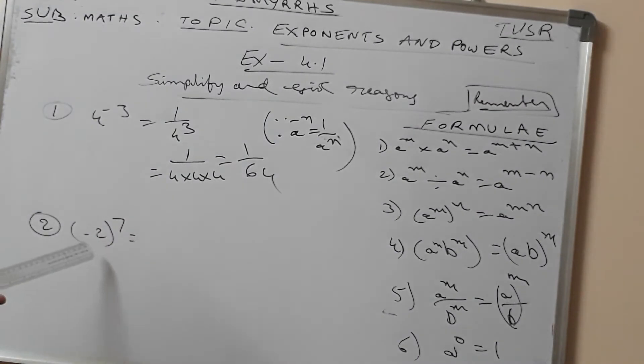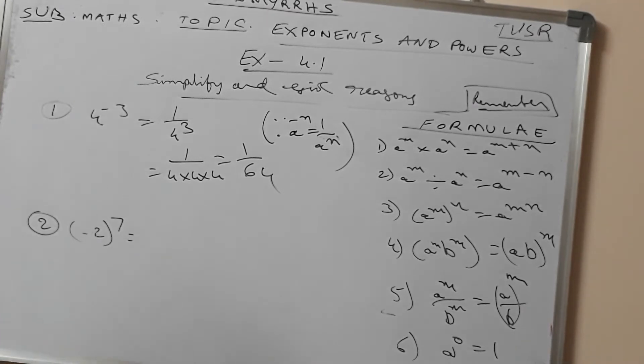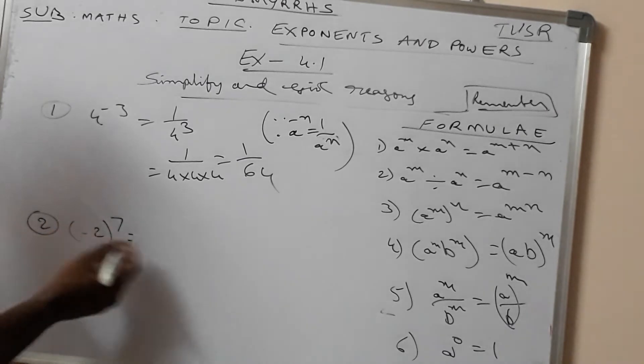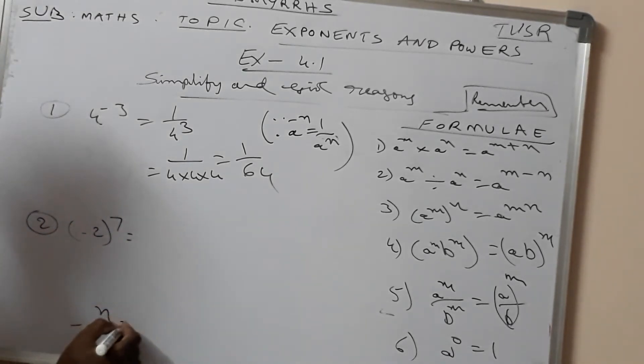Next problem: minus 2 whole to the power of 7. This is minus 2 to another power. This is the form minus e to the power of n.